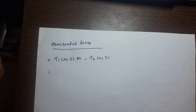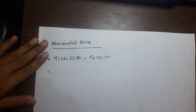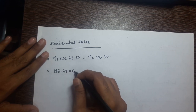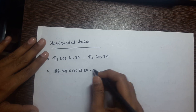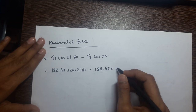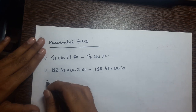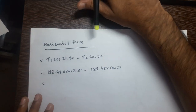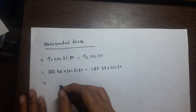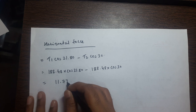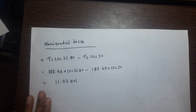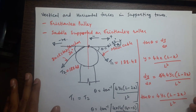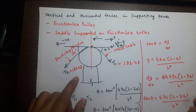Since T1 = T2 = 188.48 kN for the frictionless pulley, horizontal force = 188.48 × cos(21.80) − 188.48 × cos(30) = 11.77 kilonewtons.